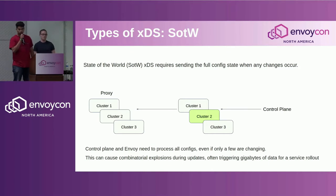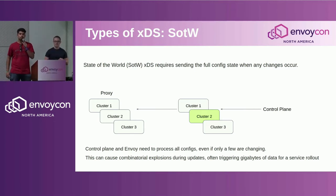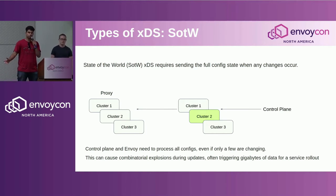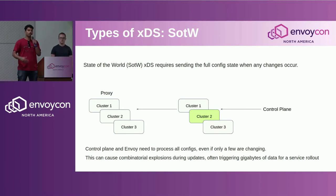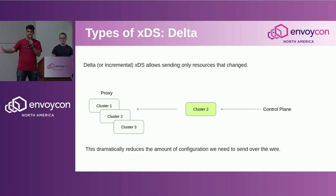Currently we run state-of-the-world XDS: for every single proxy we have to send every single resource it needs, every single time. If you have three clusters and only cluster two changes, you still have to send all three. This causes combinatorial explosions during updates, triggering gigabytes of data even if only one service is changing.